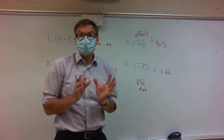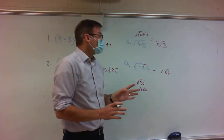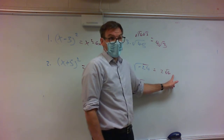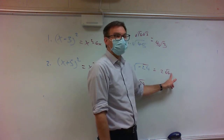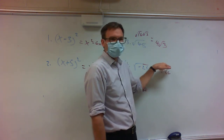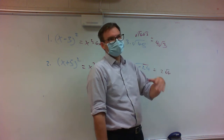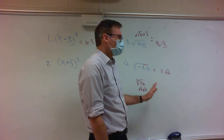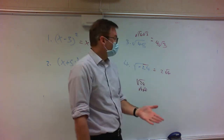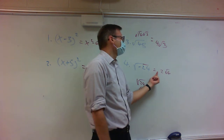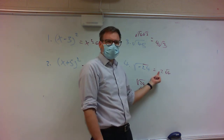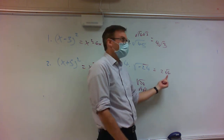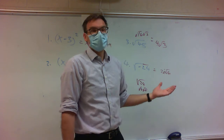It doesn't technically matter — there are three places you could put the i, and all of them are correct. The problem with putting the i at the end of the square root is sometimes you get sloppy and appear to take the square root of i, which you don't know how to do yet. To avoid that, put the i in front of the square root. If you look up your answer in the back of the book, they put the i in the middle.